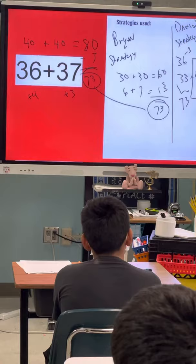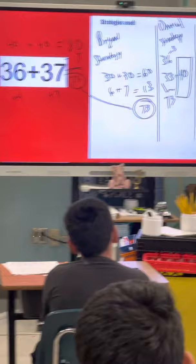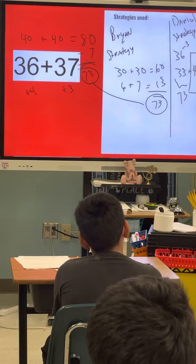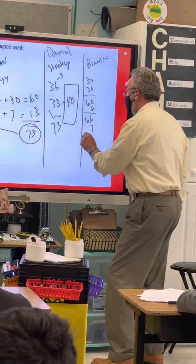Brandon, you look very eager to share. Go ahead. I added 30 to 30. 30 plus 30. And then they gave me 60. Okay. And then I added 60 to 6. Okay. And that gave you what? That gave me 66. Okay. And then I added 66 to 7. Okay. That gave me 73.